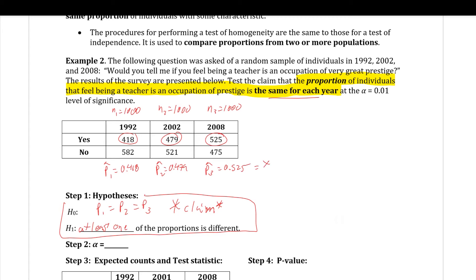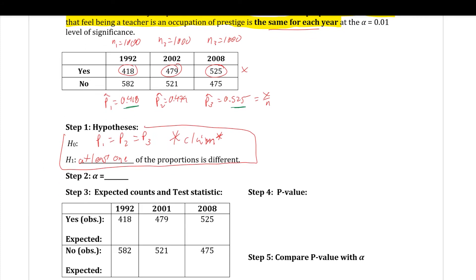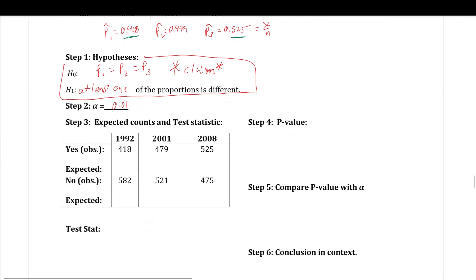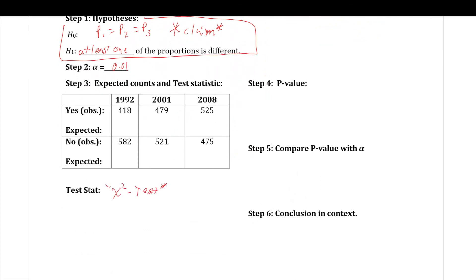Just comparing these from a bird's-eye view, 41.8% is the smallest and 52.5% is pretty large — there might be some significant difference. Step two: significance level is 0.01. Step three: just like before, we'll calculate our test stat and p-value at the same time using the chi-squared test on the calculator. We'll put the observed data into matrix A, then write down the results from matrix B.